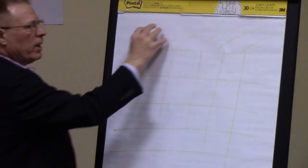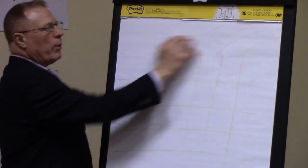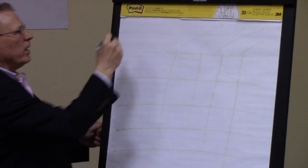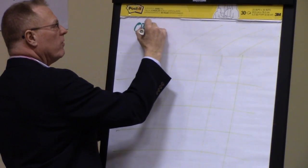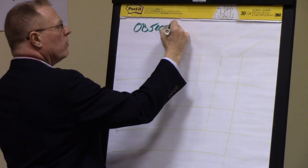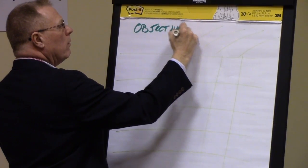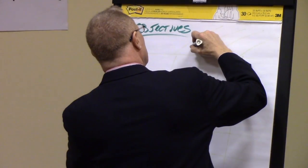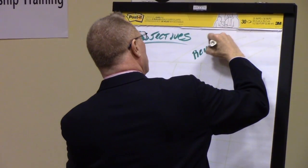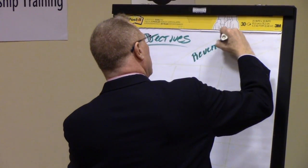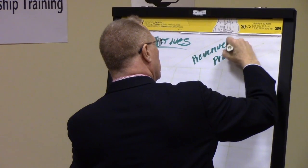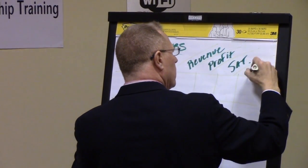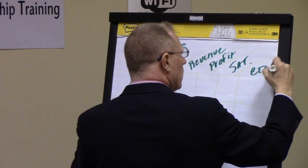This is our Y coordinate. This is our X coordinate. We're going to put what we have the fewest of across our X coordinate. Typically, what we have the fewest of would be objectives. Objectives for many groups would involve things such as revenue, profit, customer satisfaction, etc.